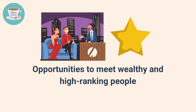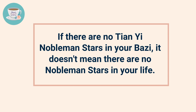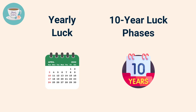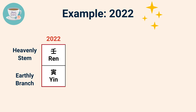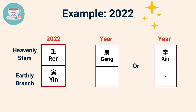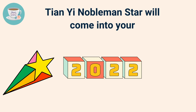If there are no Tianyi Nobleman stars in your Ba Zi, it doesn't mean there are no Nobleman stars in your life. To find your Nobleman star, you need to pay attention to your yearly luck and your 10-year luck phases. For example, in terms of yearly luck, 2022 is the year of Ren Yin. If your year stem is Geng or Xin, both are compatible with the earthly branch Yin. Therefore, Yin is your Nobleman star, meaning Tianyi Nobleman star will come into your life but only in 2022.